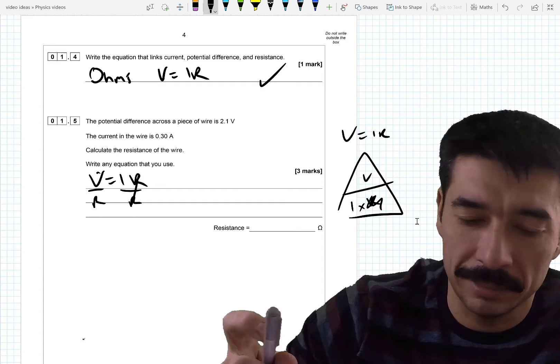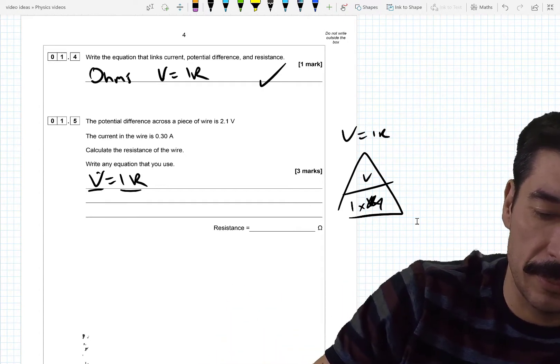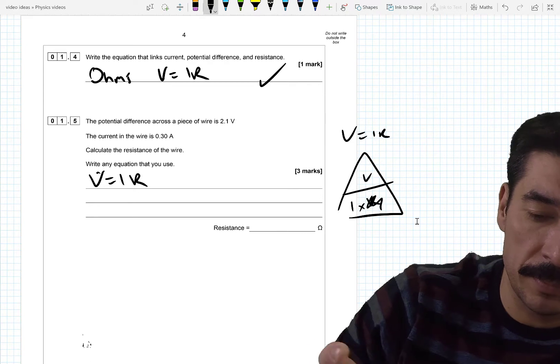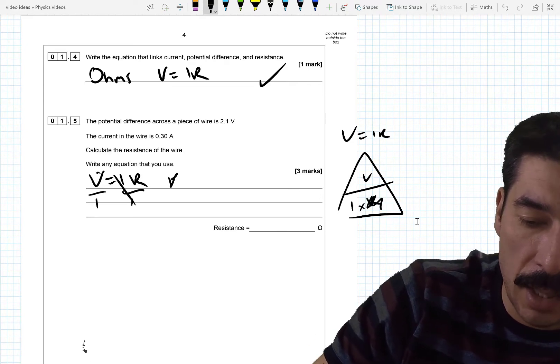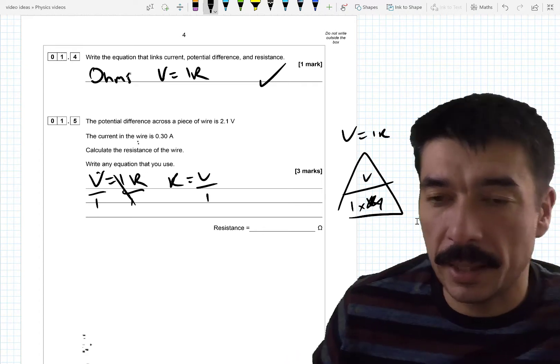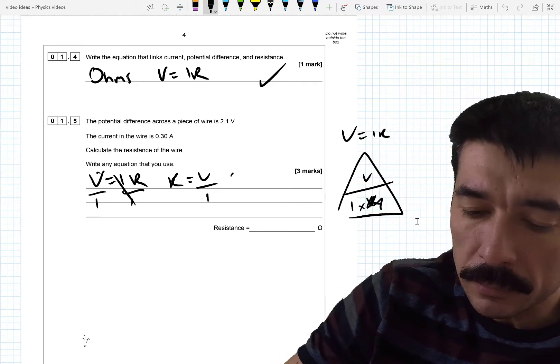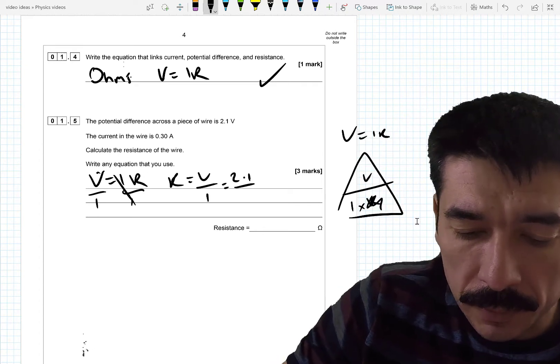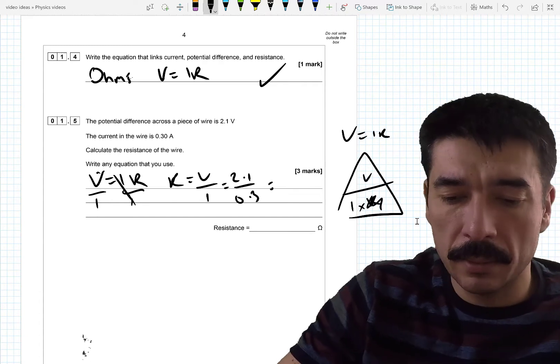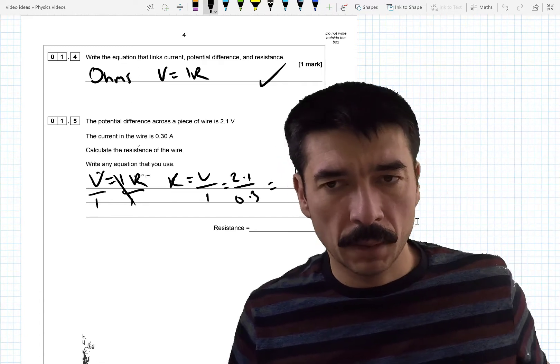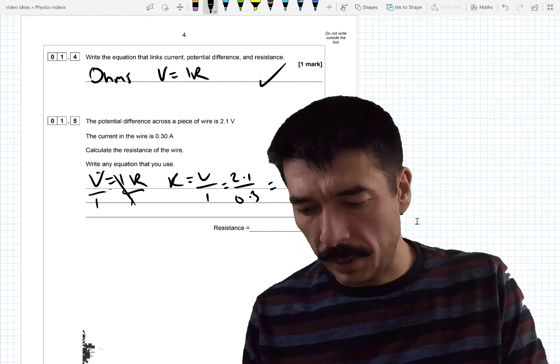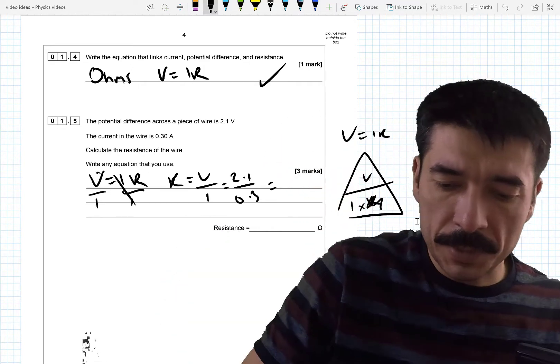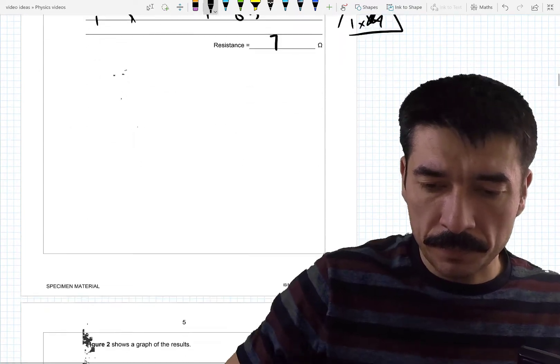Oh, I'm after R. Why did my rearrangement wrong? I would divide both sides by I. R equals V over I. Now sub the numbers in. 2.1 divided by 0.3. 2.1 divided by 0.3. 7 Ohms.